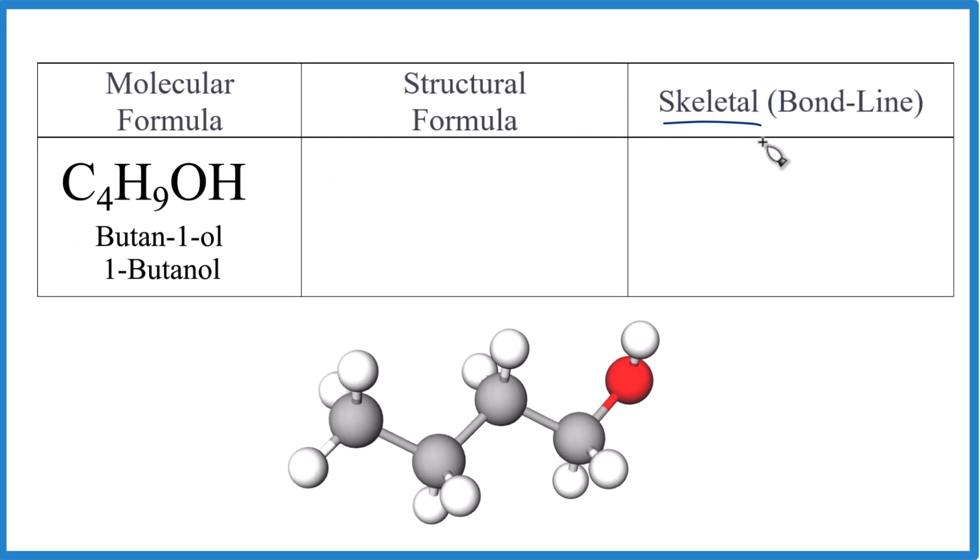Let's write the skeletal formula for C4H9OH. This is butan-1-ol. You can call it 1-butanol. Usually it's just called butanol though, because we just have a straight chain of carbons with an alcohol, an OH group on the end.